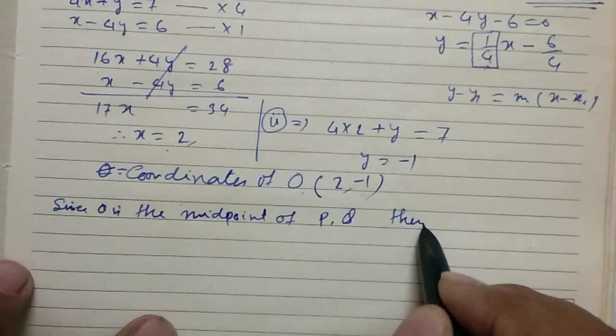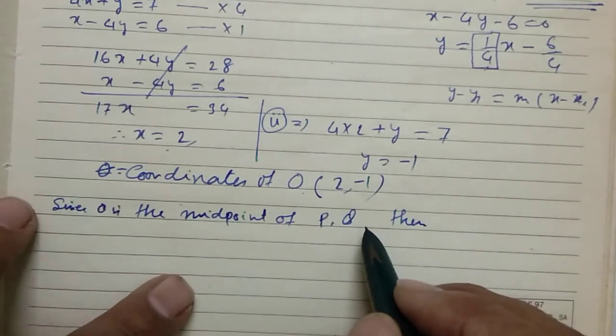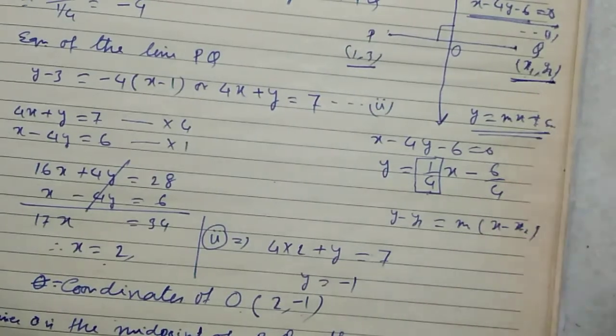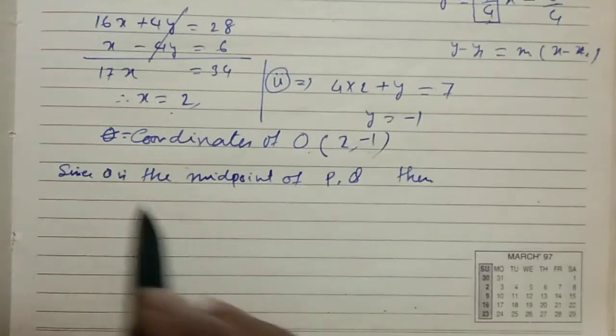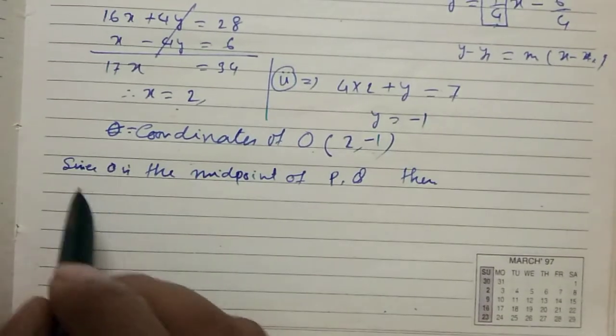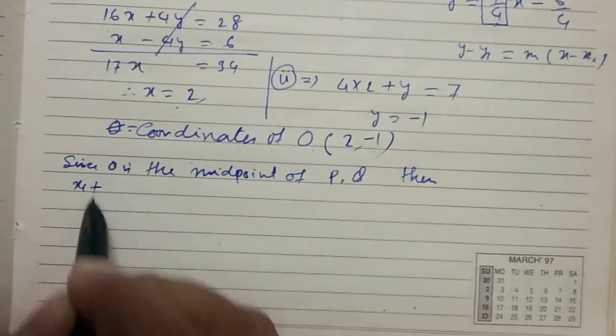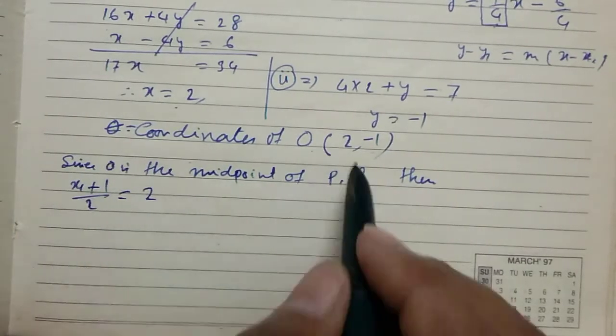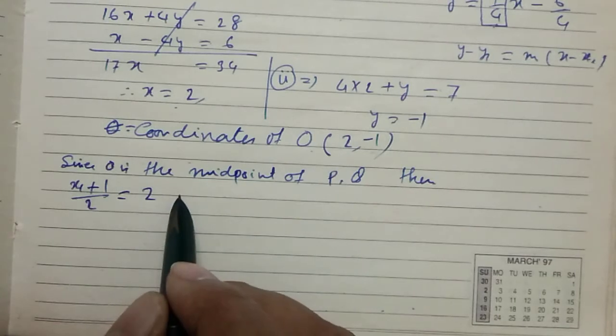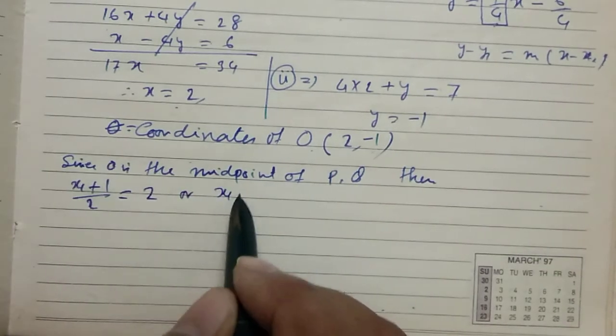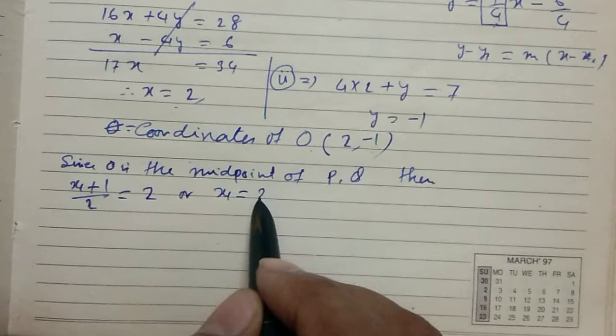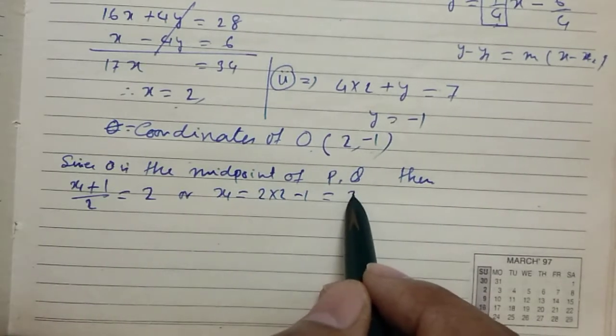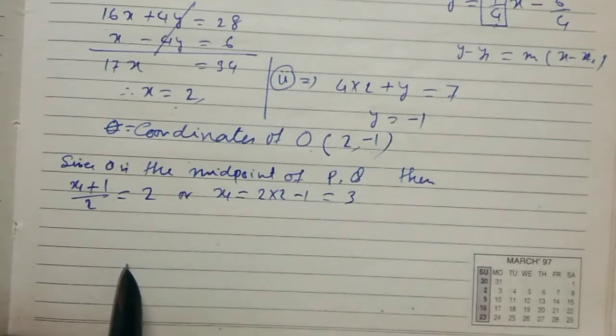We let the coordinates of Q be x1, y1. Then x1 plus 1 by 2, that is equal to 2. Or x1 equals 2 into 2 minus 1, which is 4 minus 1 equals 3.